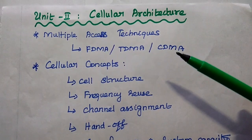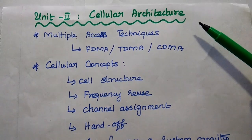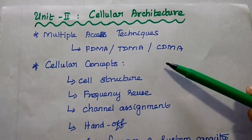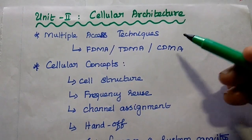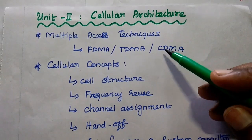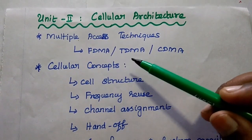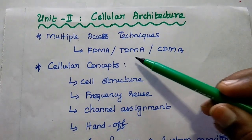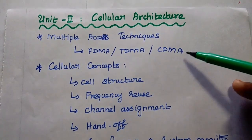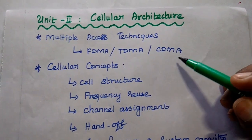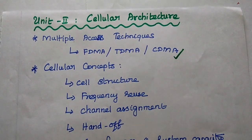The second unit is all about cellular architecture. We can divide this unit into two halves. The first half covers multiple access techniques: Frequency Division Multiple Access (FDMA), Time Division Multiple Access (TDMA), and Code Division Multiple Access (CDMA). Definitely one question will come from multiple access techniques.